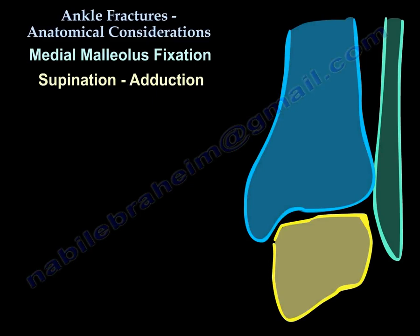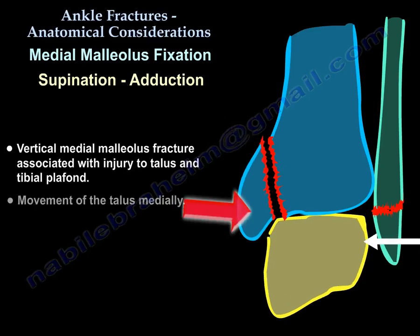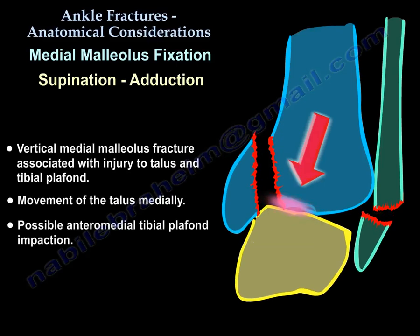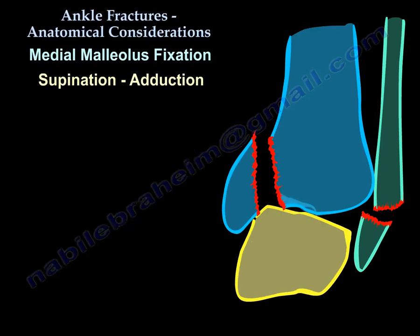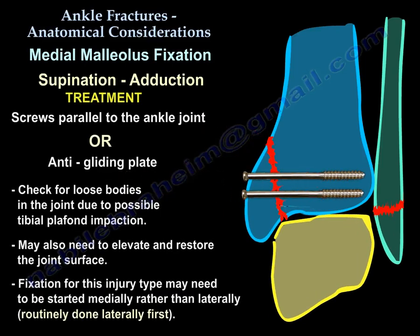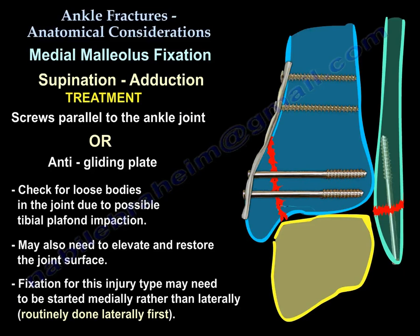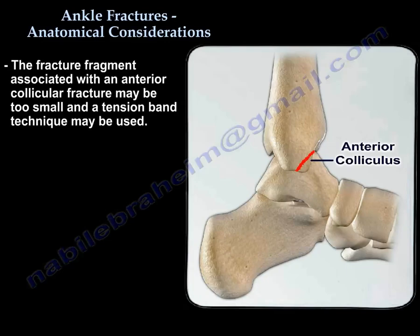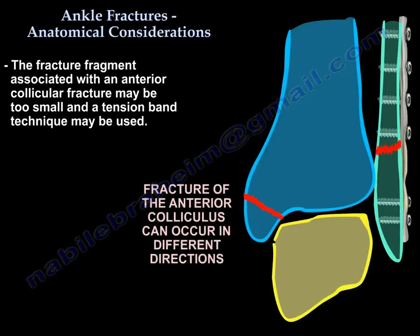For a vertical fracture of the medial malleolus, which is a supination-abduction injury, make sure you don't have anteromedial marginal impaction. Put the screws parallel to the joint or use an anti-glide buttress plate. If you have an anterior collicular fracture where the fragment is too small to fix with screws, you may want to use a tension band technique.